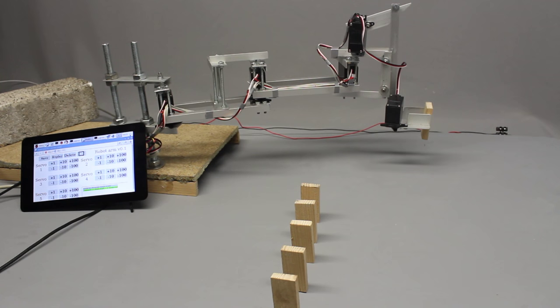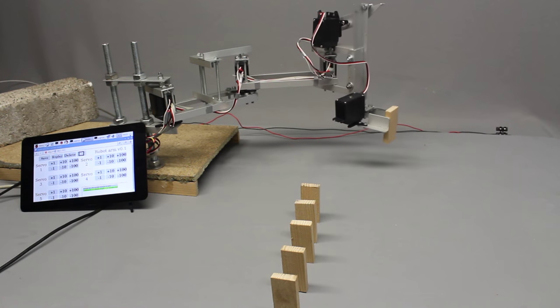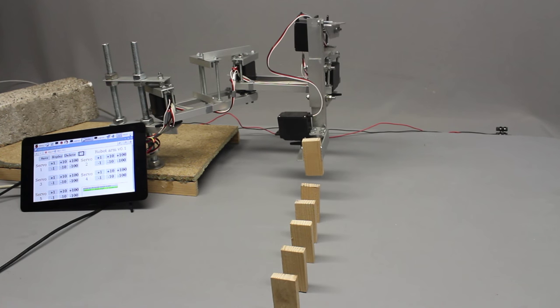The electronic parts are 5 servos, an Arduino Uno and a Raspberry Pi. An old computer power supply feeds the arm with electricity.